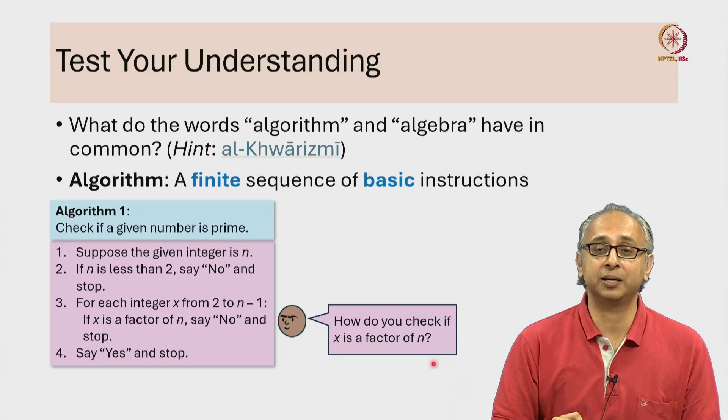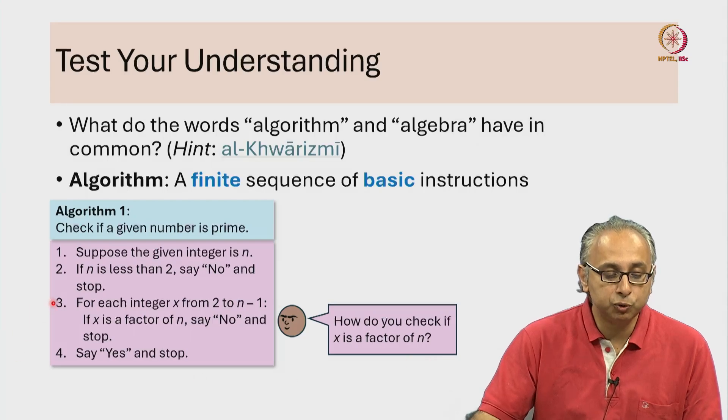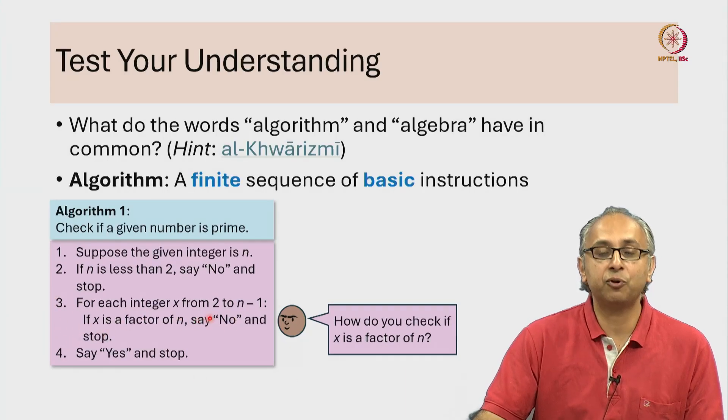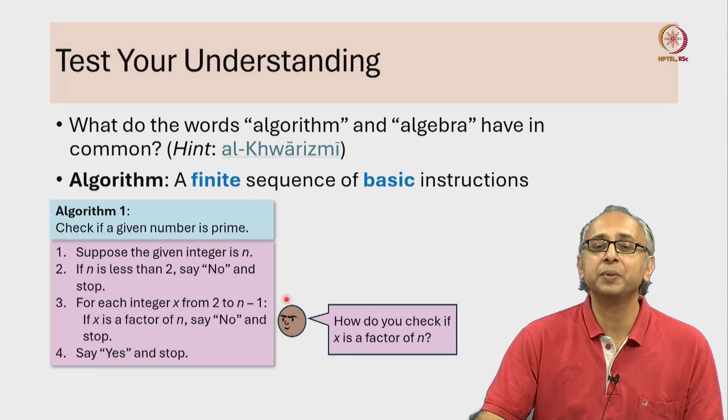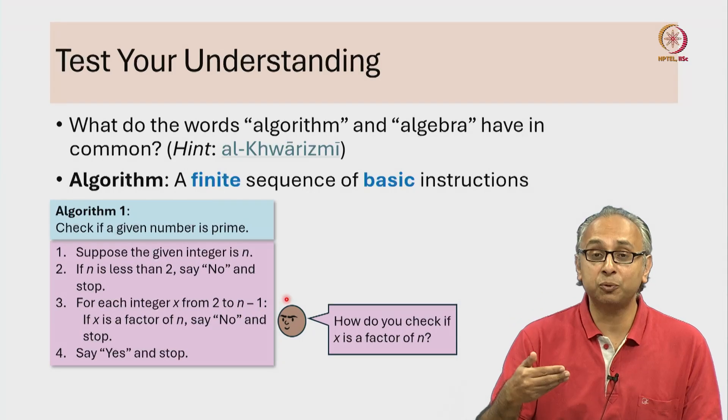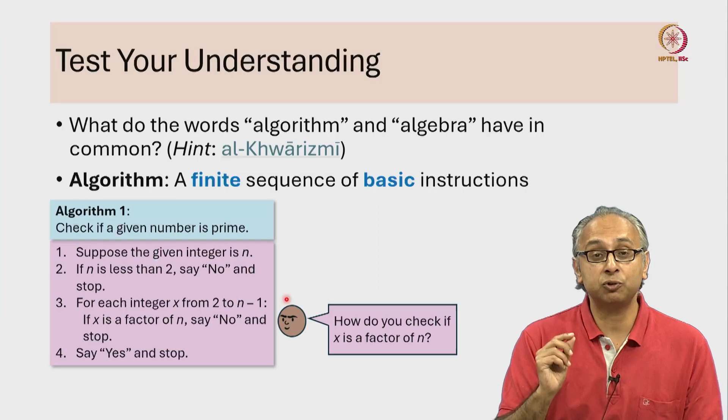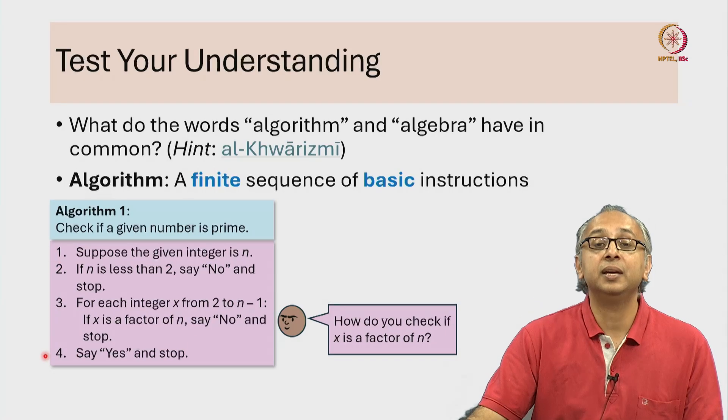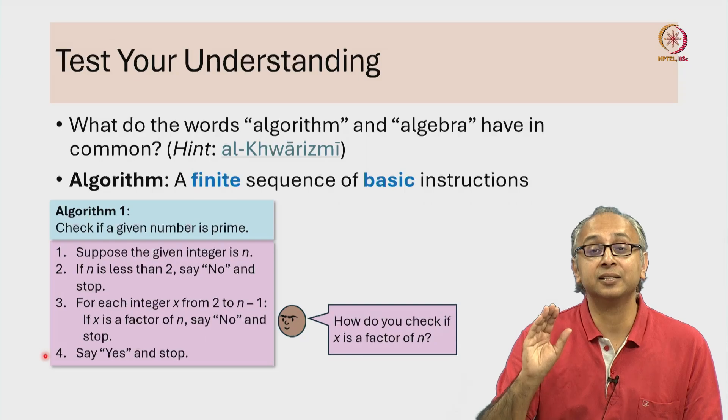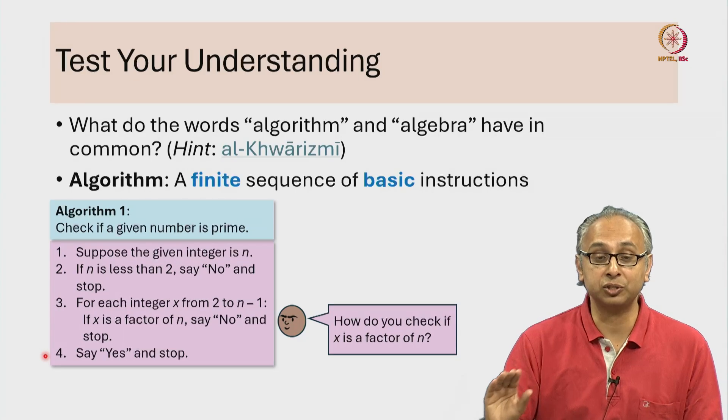So, if that is a basic instruction, then doing that basic instruction again and again for all integers in the range 2 to n minus 1 is again a sequence of basic instructions. And now, the entire sequence is a finite sequence of basic instructions.